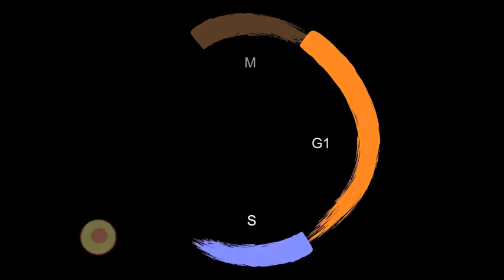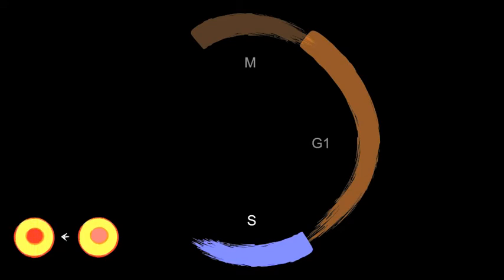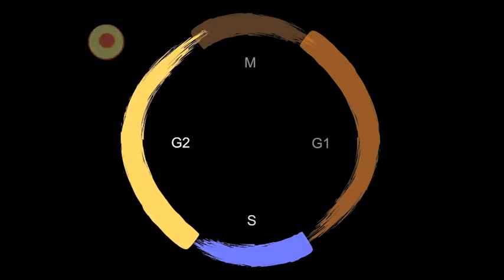Cell replication occurs in cycles. Each cycle can be separated into four phases: division or mitosis, a post-mitotic growth phase G1, DNA synthesis or S phase, and a pre-mitotic growth phase G2.